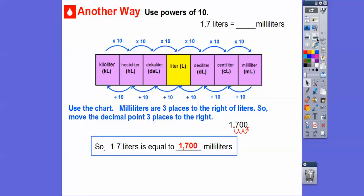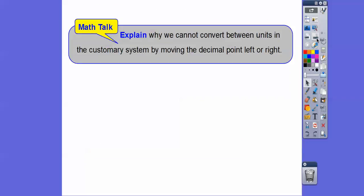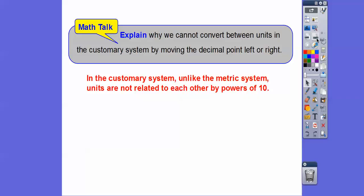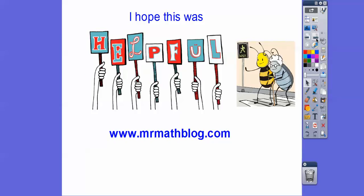Explain why we can't convert between units in the customary system by moving the decimal place left and right. Well, the customary system, not like the metric system, doesn't have units of ten like the metric systems are, so we can't do that. I hope that makes sense. Take care and hope you're having a great year.